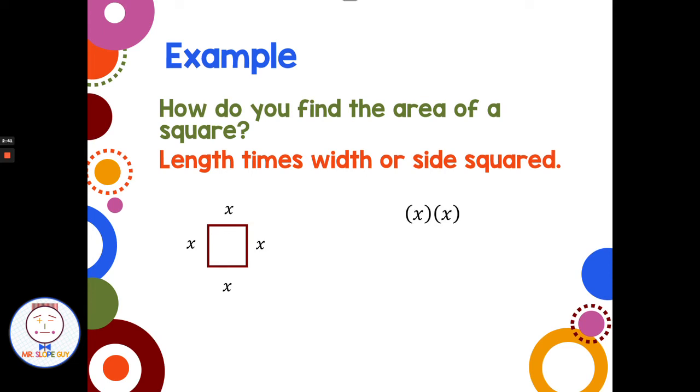So I could do length times width is x times x, or I could just take one of the sides and square it. So the area of this square is x squared.